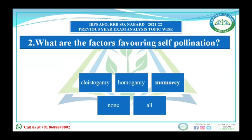In cleistogamy, pollens are shed within the closed flowers, and that necessitates self-pollination. Cleistogamy is common in grape, papaya, and others. Next is homogamy — in this condition the stamen (male androecium) and the carpel or pistil (female gynoecium) of the flower mature at the same time, which enhances the chance of self-pollination.